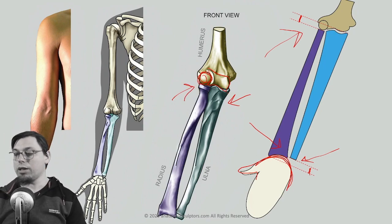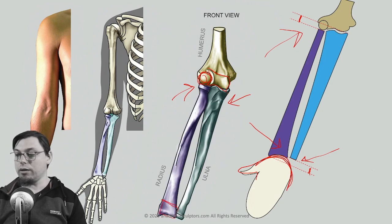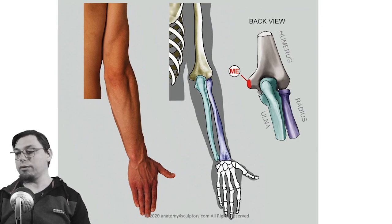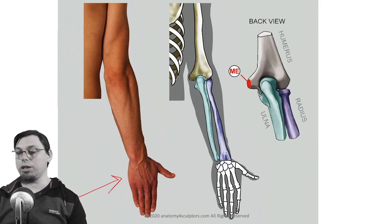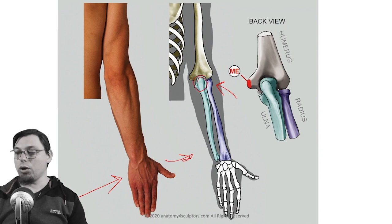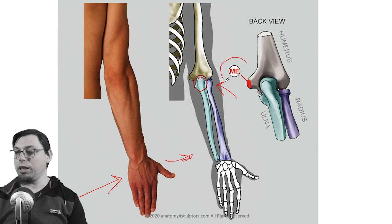At the other end, the radius has a wide distal end while the ulna has a cylindrical, thin distal end. When viewed from the back in anatomical position — thumb pointing laterally — the radius is somewhat hidden behind the ulna. From this view we can also see the medial epicondyle and the lateral epicondyle.